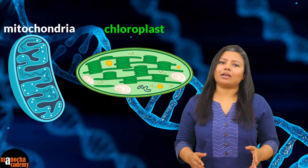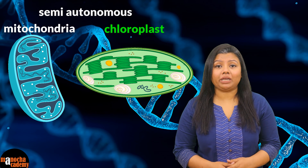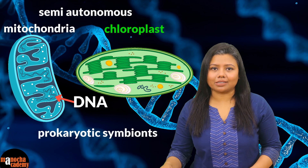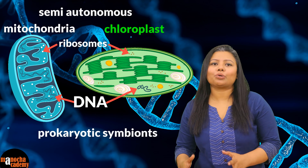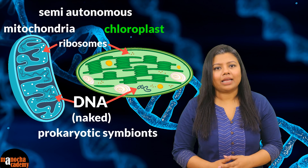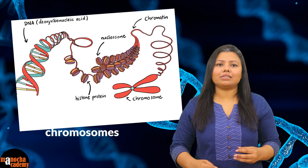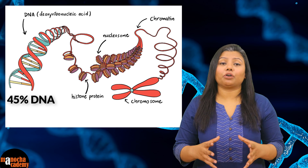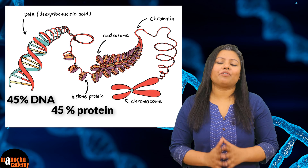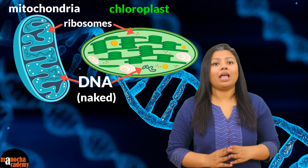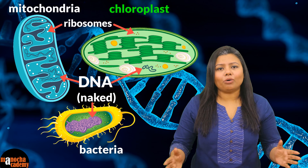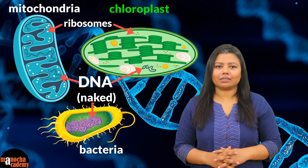Just like mitochondria, chloroplasts are also semi-autonomous and they are believed to be prokaryotic symbionts. Chloroplasts also have their own DNA and protein synthesizing machinery — that is ribosomes. In eukaryotes the DNA remains in the form of chromosomes, meaning DNA remains coiled around different kinds of proteins — 45% of the chromosome is DNA, 45% is protein and the rest 10% is RNA. But in case of both mitochondria and chloroplasts the DNA is just like that we see in bacteria — without any protein — and that is why this kind of DNA is known as naked DNA.